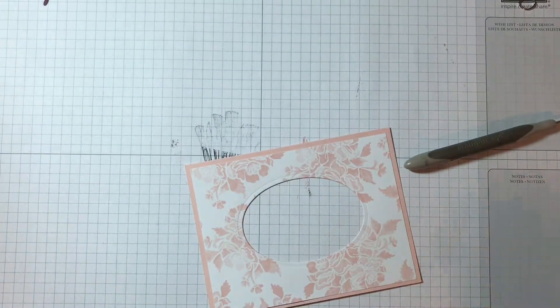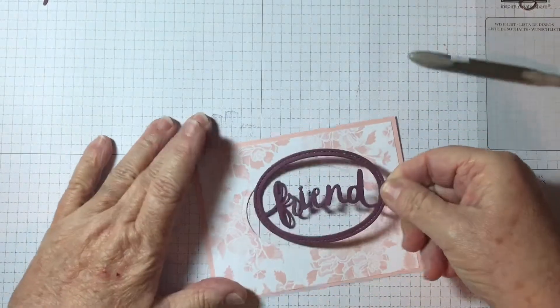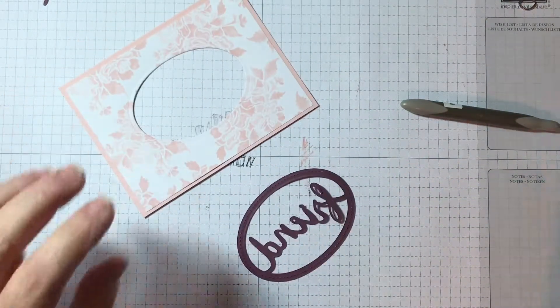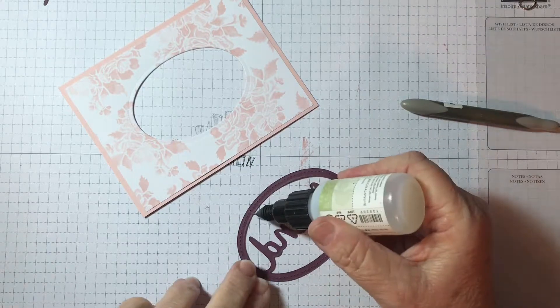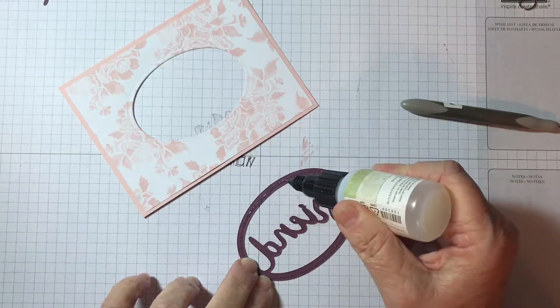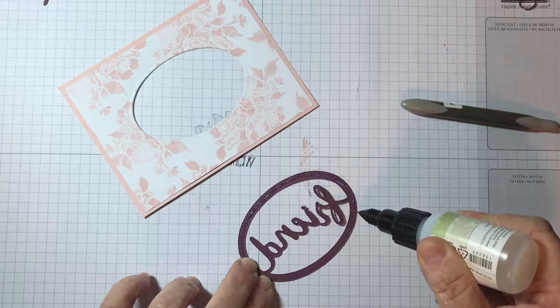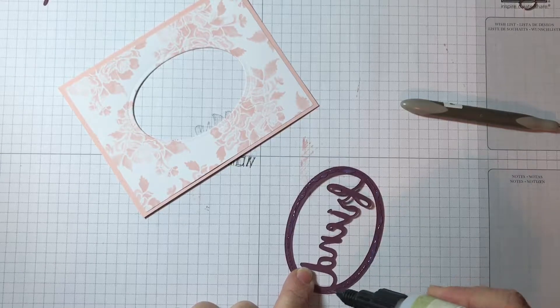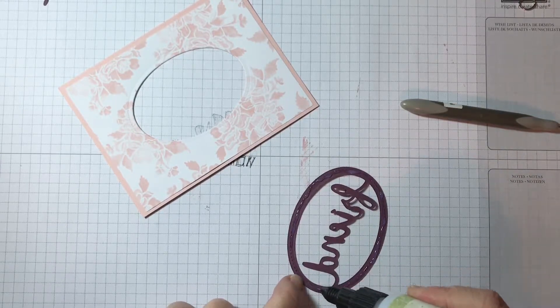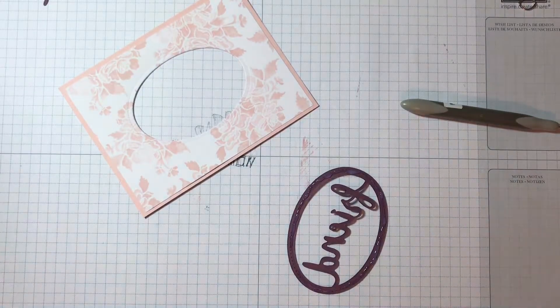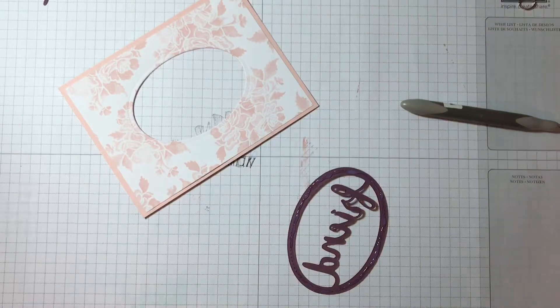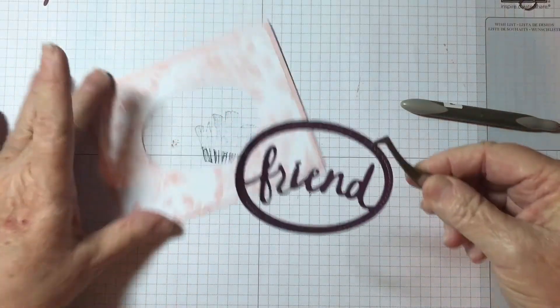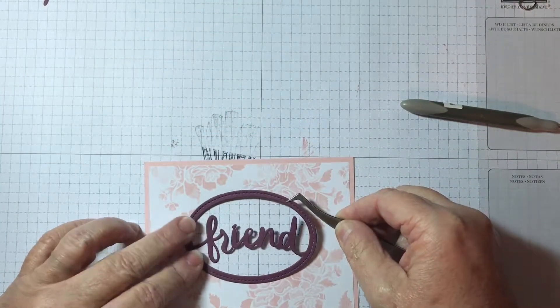Now I'm going to adhere this to my card and I'm going to use the two-way glue. I am going to pick this up with my tweezers and lay it down on the top of my card.